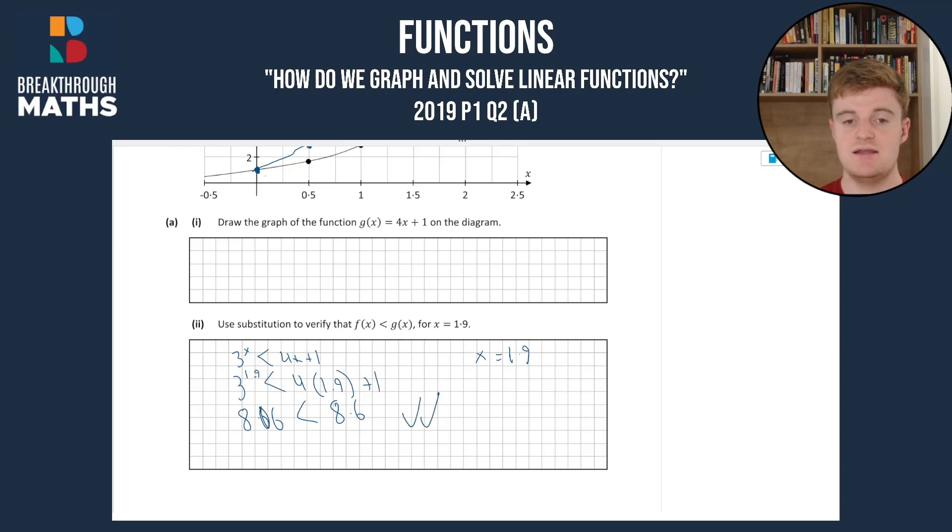It most certainly is, it is less than, so you can give yourself a double tick. Therefore, f(x) < g(x) for x = 1.9.